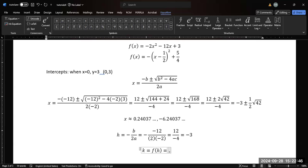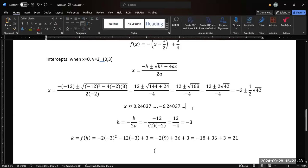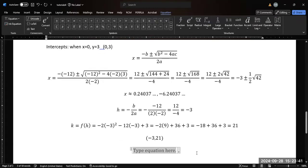And then the k coordinate is just f evaluated at h, so at the vertex value. So if we plug that in, we get negative 2 times negative 3 squared minus 12 times negative 3 plus 3, which is negative 2 times 9 plus 36, because again 2 negatives plus 3, and that's going to give me negative 18 plus 36 plus 3, which is 18 plus 3, which is 21. And so the vertex is at (-3, 21). The x coordinate of the vertex is the axis of symmetry, so that is x equals negative 3.